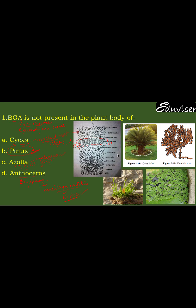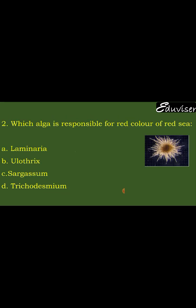This is the habit diagram of Cycas with its coralloid root representation. The structure shown here is Anthoceros — the hornwort — which looks somewhat like a horn shape. The structure on the side is Azolla. So the answer to question 1 is Pinus — BGA is not present in Pinus.